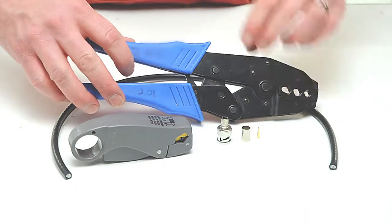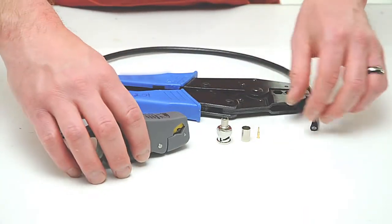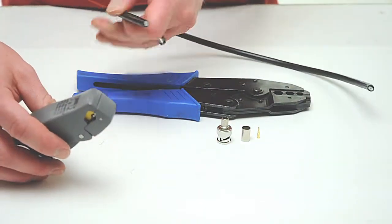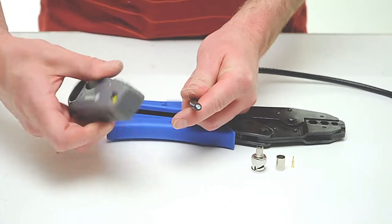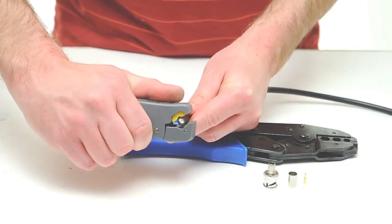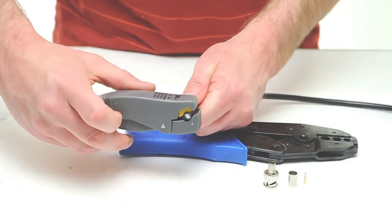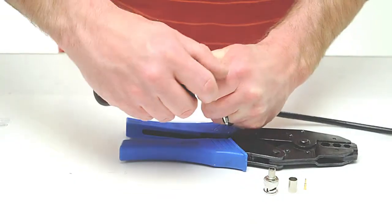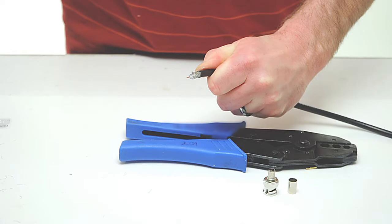To begin, take your coax stripper and remove the outer jacket and dielectric of the cable. The advantage of using a coax stripping tool is that it cuts both the outer jacket and dielectric at the same time. Rotate the tool a few times around the outside of the cable and peel the jacket off.